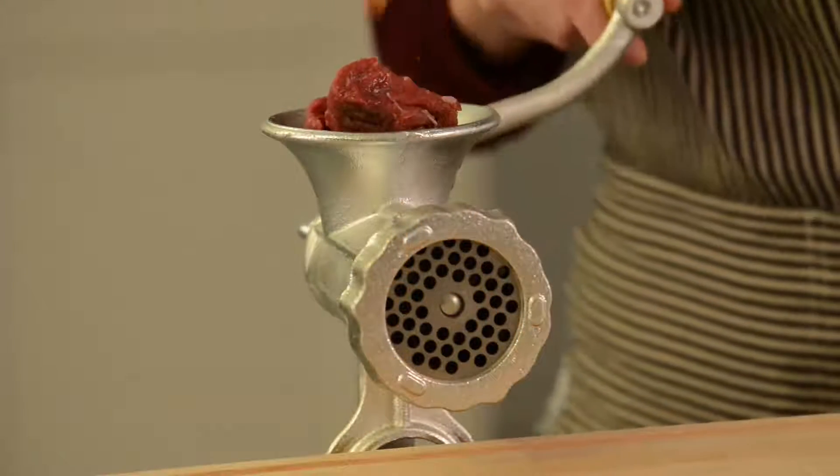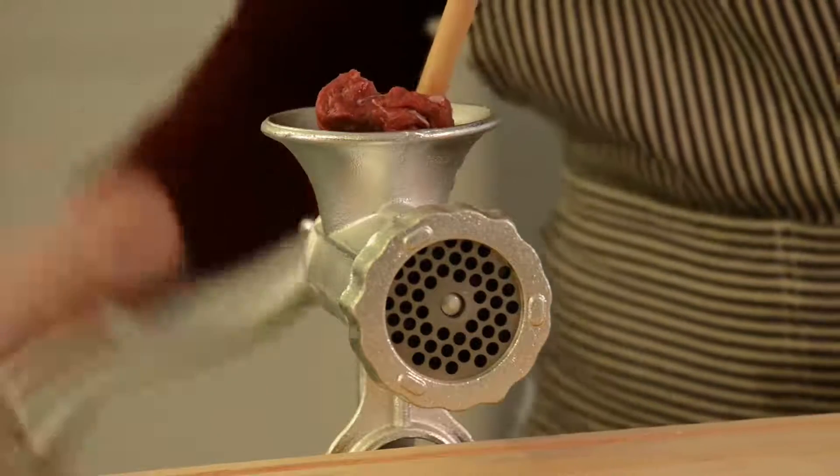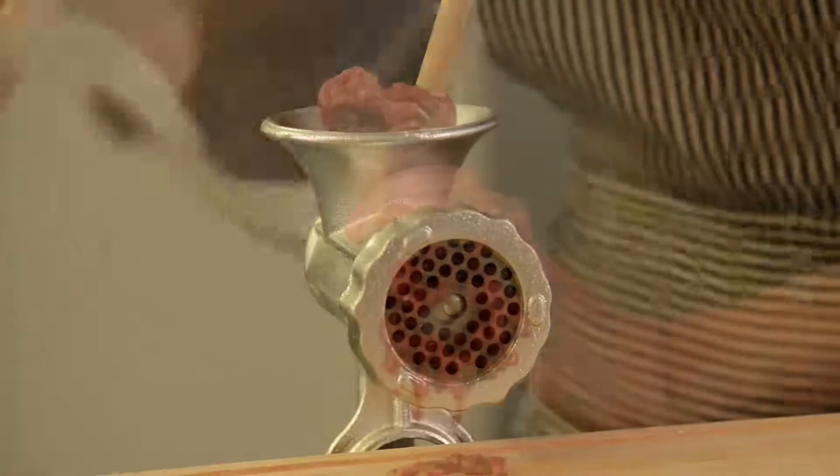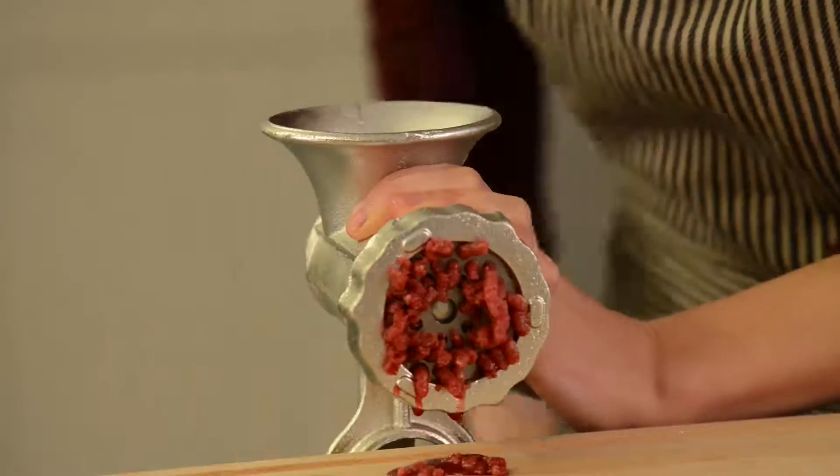Once cleaned, use an inanimate object to push diced meat into the top of your mincer. Turn the handle in a steady clockwise motion.